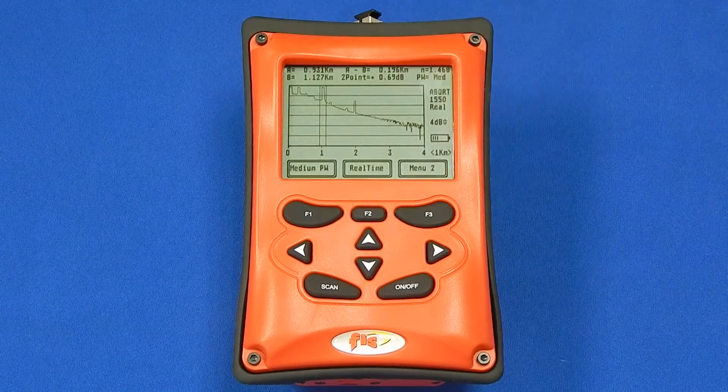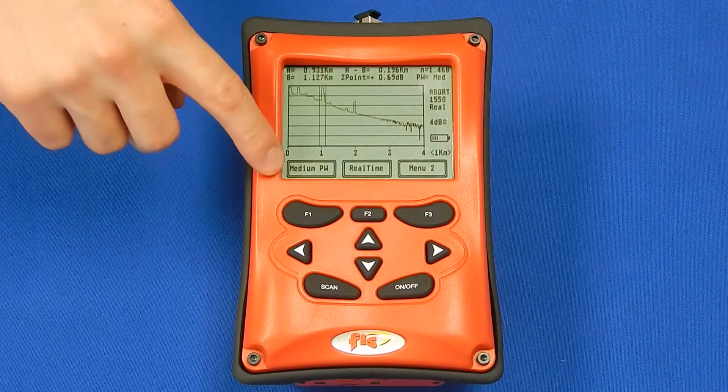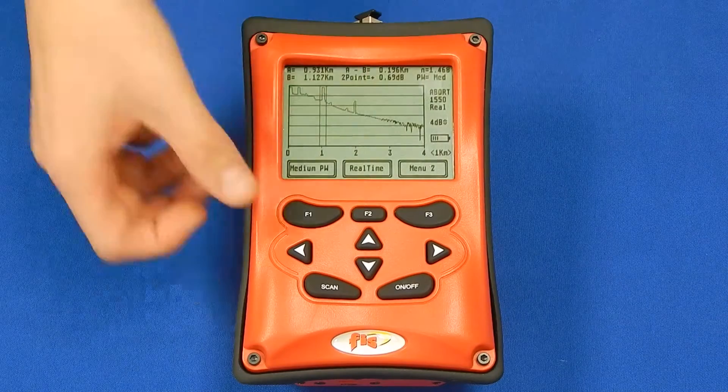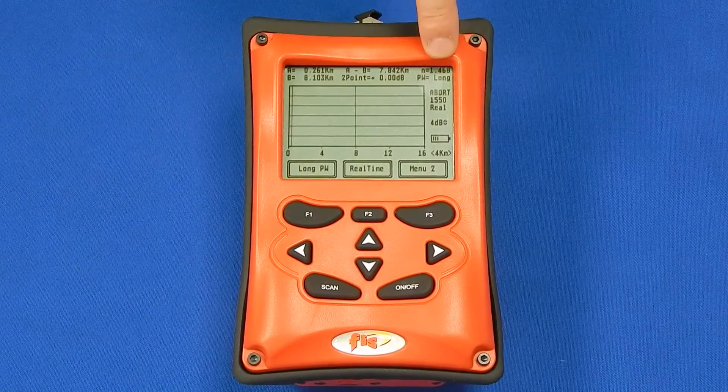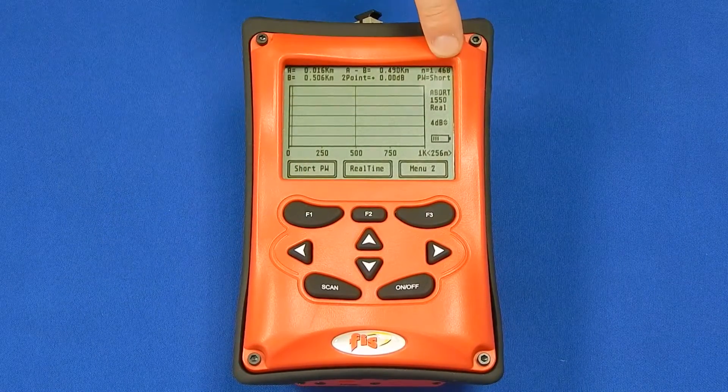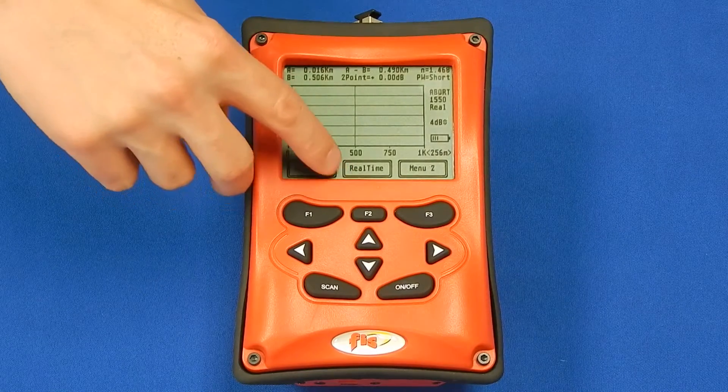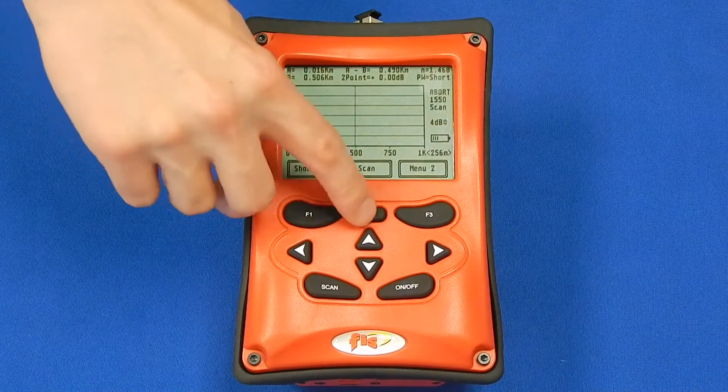In menu two, selection of the pulse width is accessed where either medium, long, or short pulse widths can be selected. You can also adjust from scan mode or real-time mode.